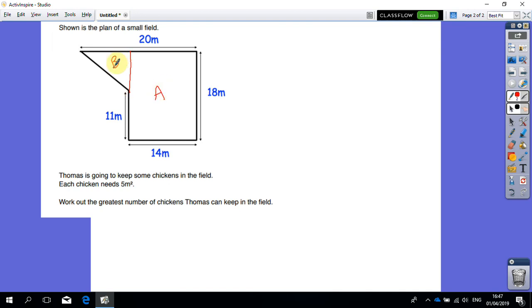I haven't even worried about the question yet. I know that we've got to work out the area. Area A we can work out - we know that it is 14 times 18. If I multiply those two together, we get 252 meters squared.